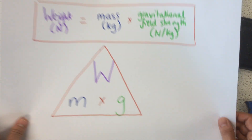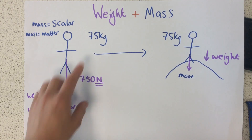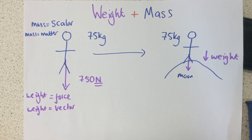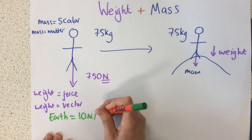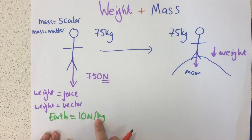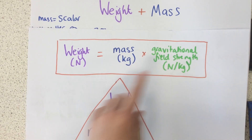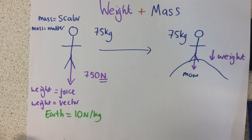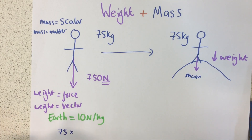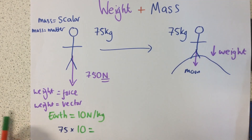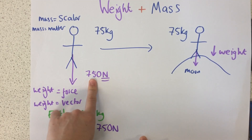Let's see how this equation relates to our example. On earth, we always take the gravitational field strength to be 10 newtons per kilogram — this is a number you need to know. To find the weight, we do mass multiplied by gravitational field strength. This person's mass is 75 kilograms, and the gravitational field strength is 10 newtons per kilogram. 75 times 10 is 750 newtons — that's how we get this person's weight on earth.